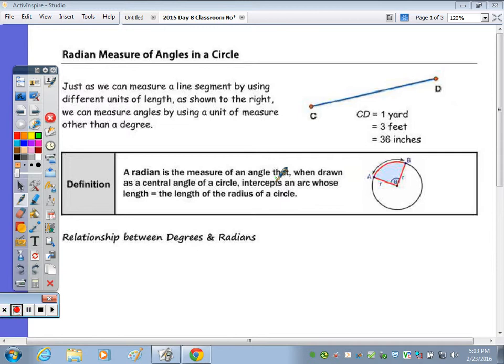Today's notes we're going to talk about another measurement for measuring angles and arcs within a circle. Just as we can measure a line segment by using different units of length, as shown to the right, we can also measure angles by a different unit of measure than just degrees.